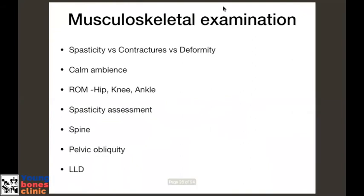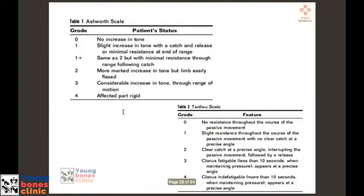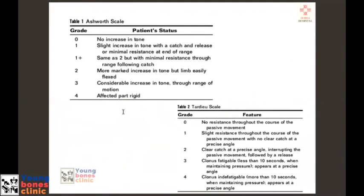The musculoskeletal examination includes assessment of spasticity and contractual deformity, done in a calm ambience. It should assess the range of motion of hip, knee, and ankle, assess the spine, pelvic obliquity, and limb length discrepancy. Spasticity in the long term leads to inhibition of muscle growth, ultimately leading to contracture and lever arm dysfunction. There are two scales used to grade spasticity.